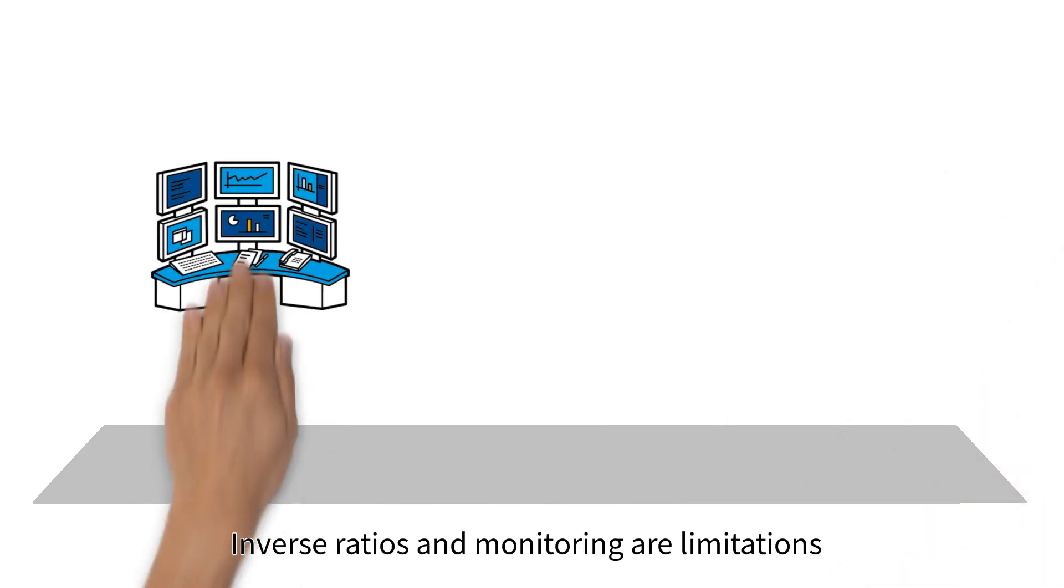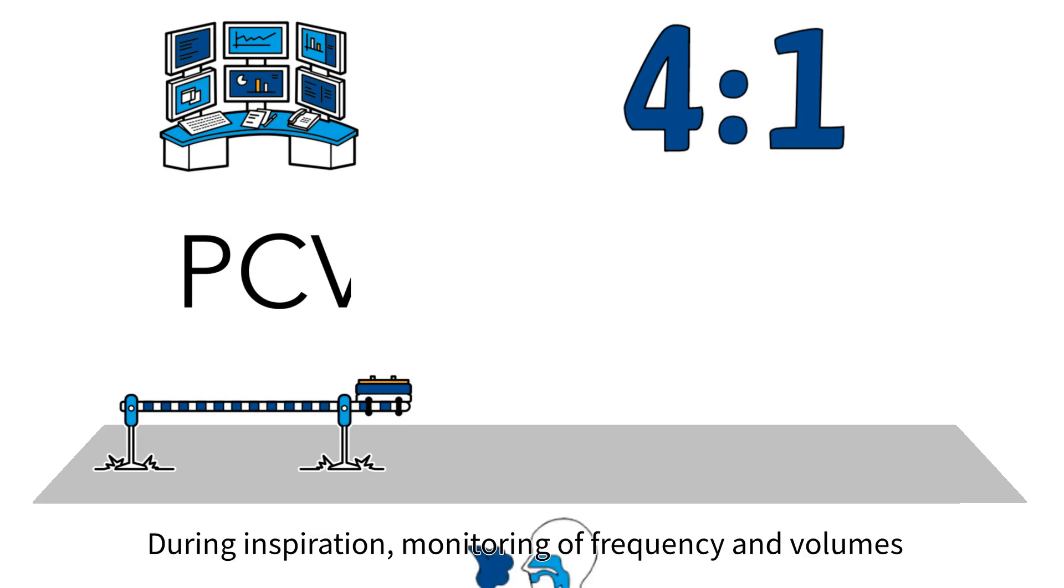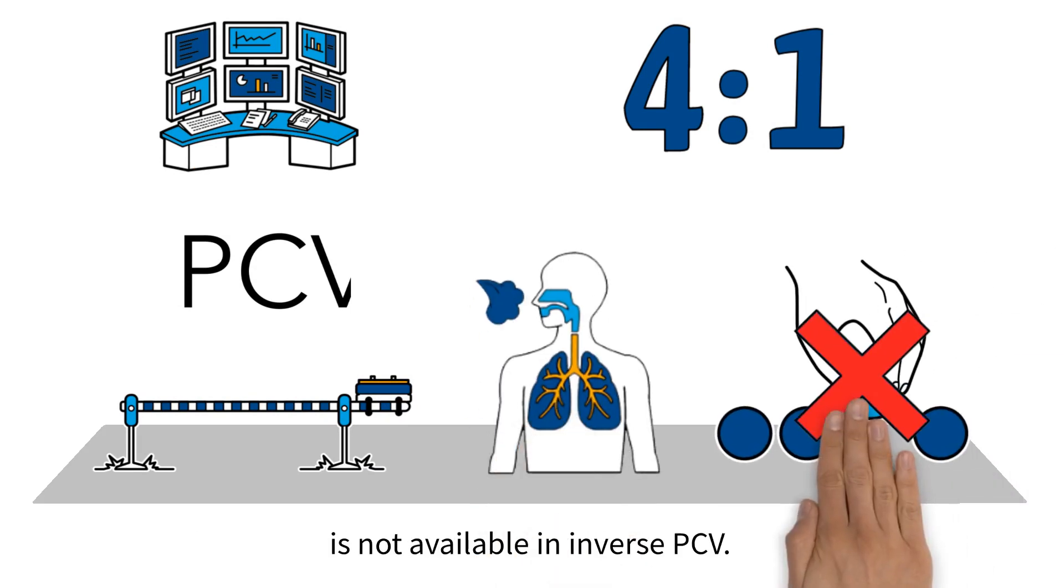Inverse ratios and monitoring are limitations in traditional PCV. The limitation of inverse ratios for PCV are four to one. During inspiration, monitoring of frequency and volumes is not available in inverse PCV.